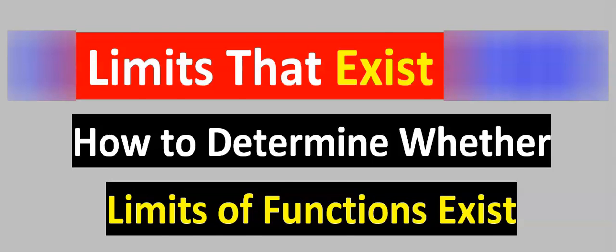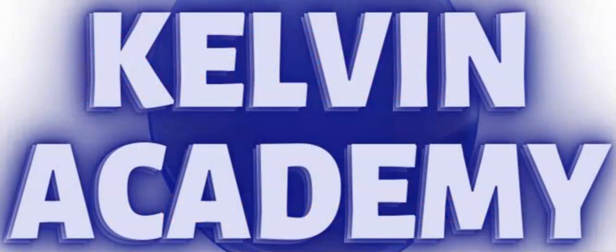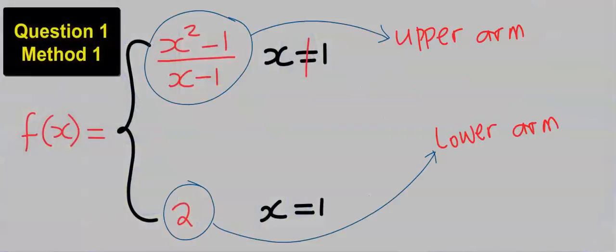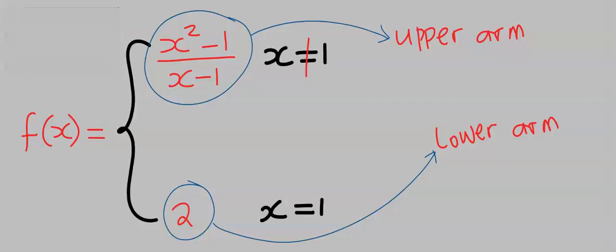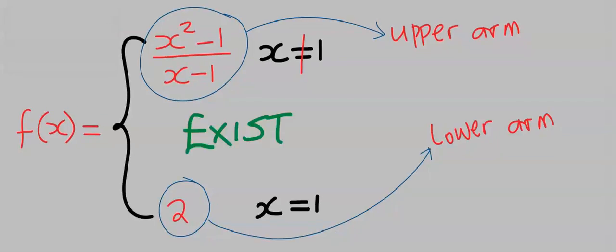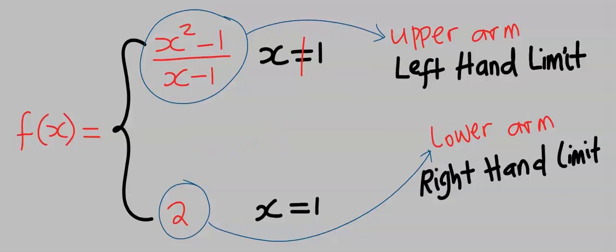Let's look at limits that exist. If the upper arm and lower arm of a function are equal, then we say the limit exists. The upper arm of the function is known as the left-hand limit, while the lower arm of the function is known as the right-hand limit.